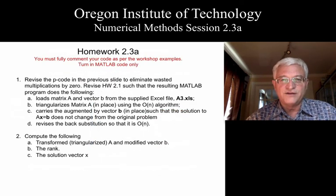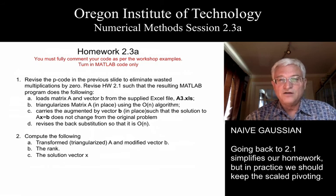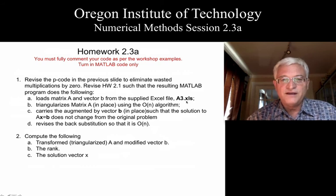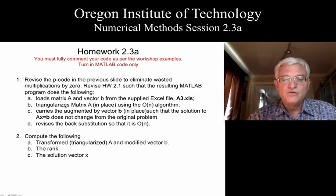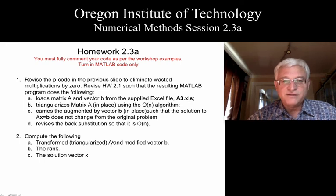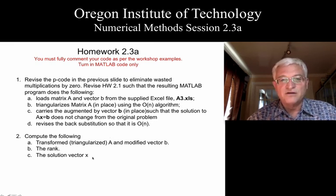I want you to roll that all together into homework 2.3a. We're going to go back to the easier homework 2.1, where we didn't do our partial or scale pivoting. I've got a new data set for you called A3.XL, and it'll work fine on the 2.1 logic, and it's also tridiagonal. So, what you need to do is load that matrix, revise the code to triangularize the code in place, also make sure you do the back substitution in an order of n manner, and come up with the actual solution. As usual, I want to see the matrix A, I want to see the vector B after you've done the transformation. I'd like to see the rank and the solution vector as part of the homework process.